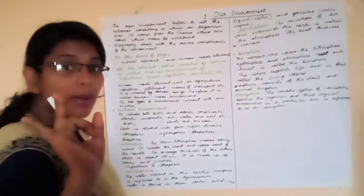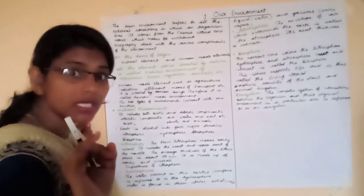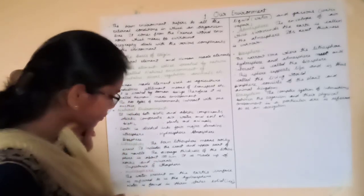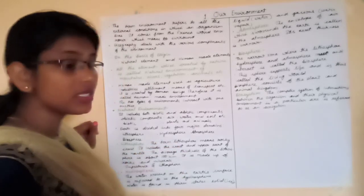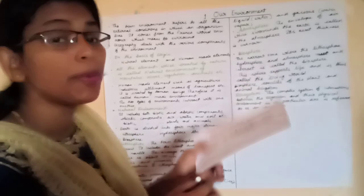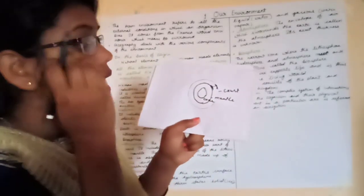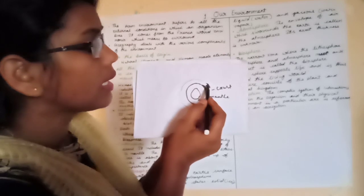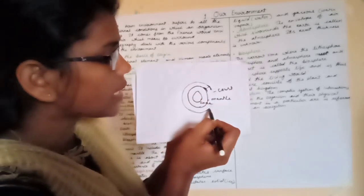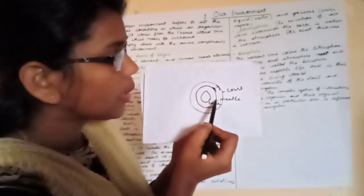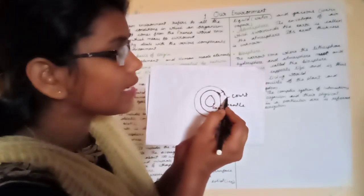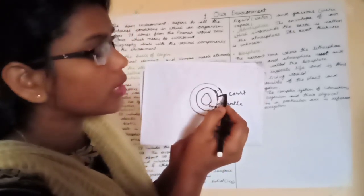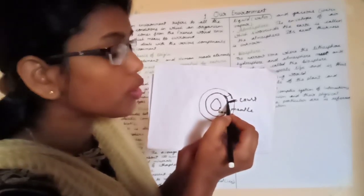The earth's interior is divided into three groups: crust, mantle, and core. The lithosphere is the uppermost part of the crust — the crust and the uppermost part of the mantle are considered the lithosphere. As I have drawn, the earth's interior is divided into three parts: crust, mantle, and core, and the lithosphere comprises the crust and the upper part of the mantle.